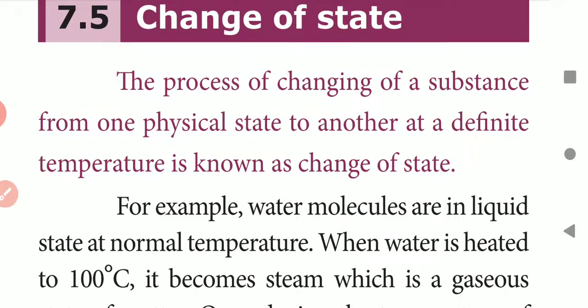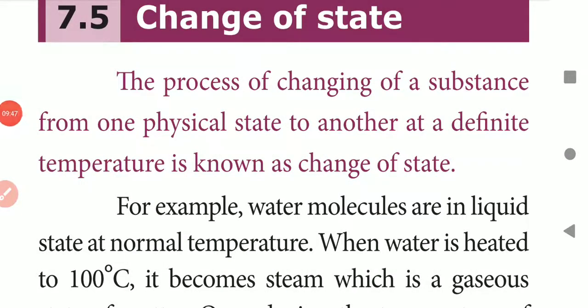Next is change of state. The three states of matter are solid, liquid, and gas. We are going to see how solid gets converted into liquid, liquid into gas, and gas back into solid — the cyclic process — and how this takes place with the help of heat changes, along with a graphical representation.